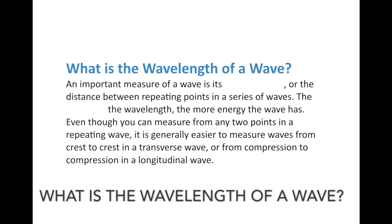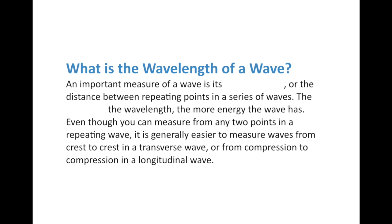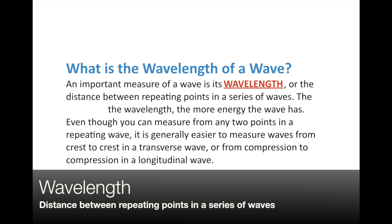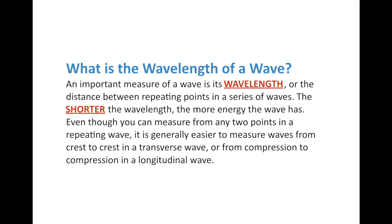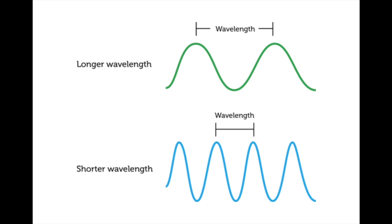Now that we know what waves are, we can talk about how we measure them. We measure waves in three major ways. The first is wavelength — the distance between repeating points in a series of waves. It essentially defines how long the wave is. The shorter the wavelength, the more energy it has. It's generally easier to measure from compression to compression for a longitudinal wave, or crest to crest, or trough to trough for a transverse wave. Looking at the diagram, we can see the difference between a longer and a shorter wavelength.